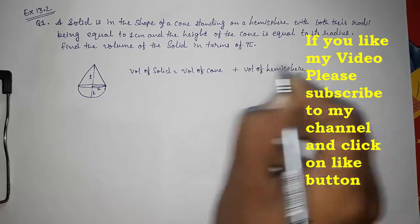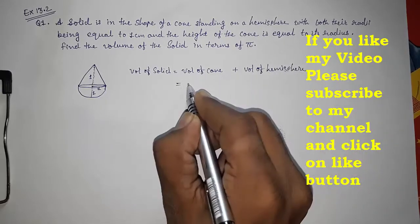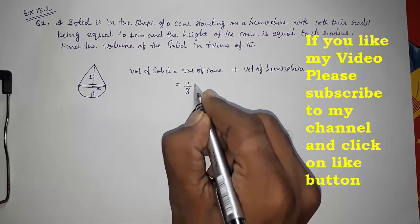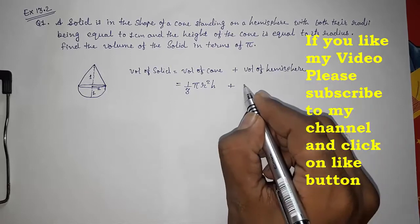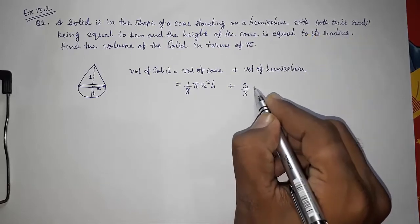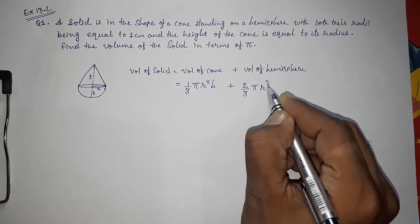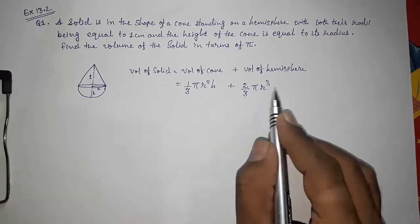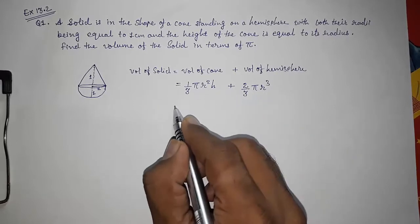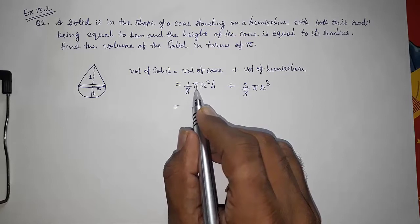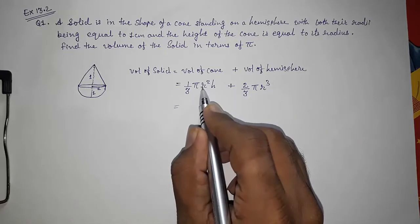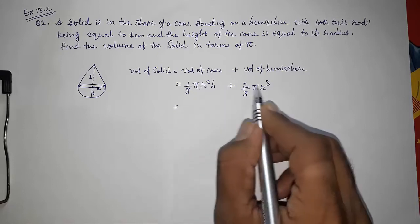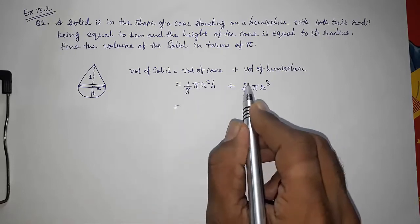Now we have to put the formula: volume of cone = 1/3 πr²h plus volume of hemisphere = 2/3 πr³. Now we can factor out common terms from these two. We can take out many things, but I am going to take π and r² common.